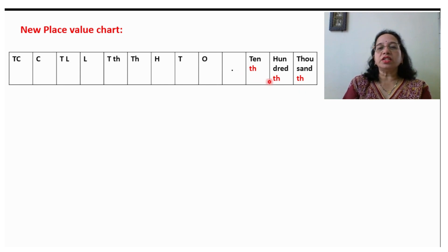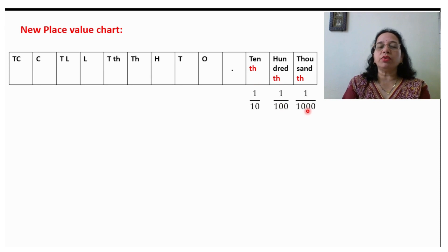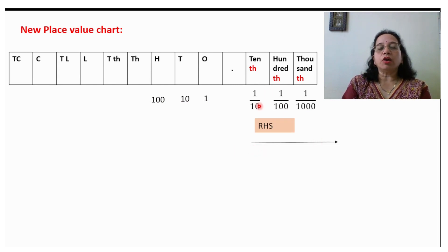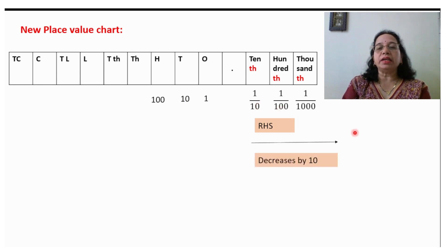The 'th' is there — it means 10 will come in the denominator. Hundredth means hundred will come in the denominator, and similarly thousand will also come in the denominator. On the right hand side of the decimal, each value decreases by 10.